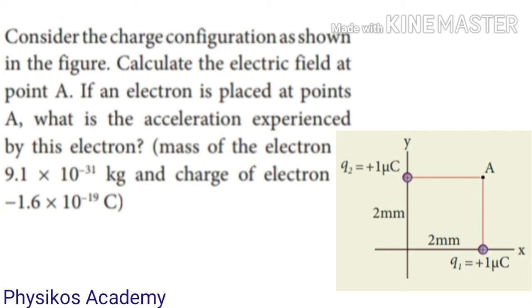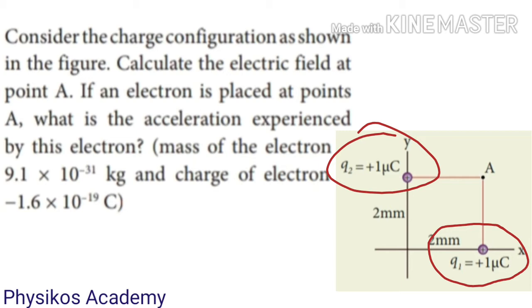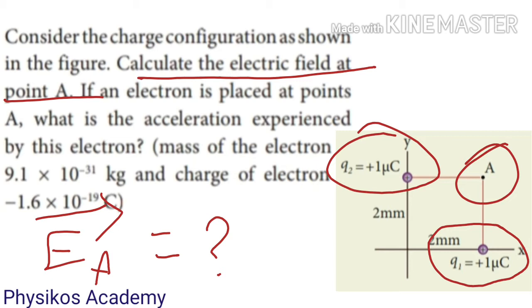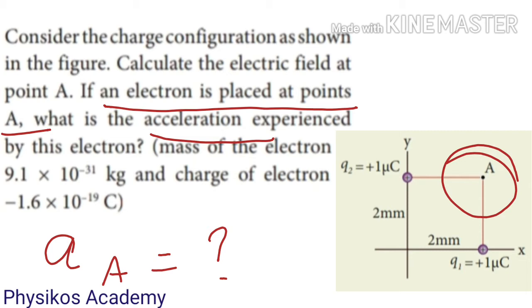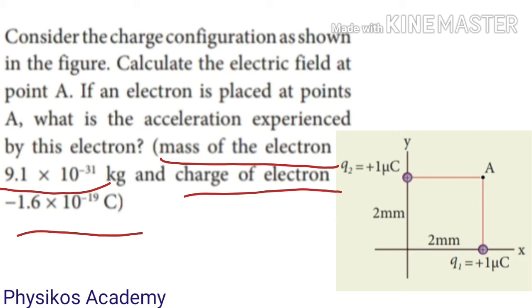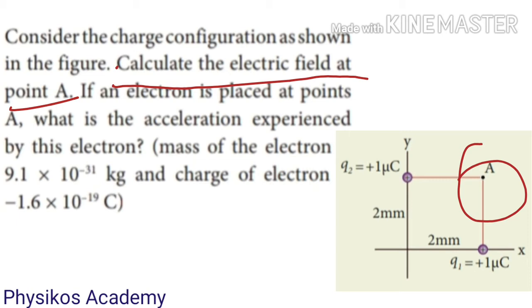Example problem 1.7: Consider the charge configuration as shown in the figure. Calculate the electric field at point A. If an electron is placed at point A, what is the acceleration experienced by this electron? In the picture, Q1 and Q2 have the same value of plus 1 microcoulomb. We need to find: first, the electric field at point A; second, the acceleration of the electron placed at point A.